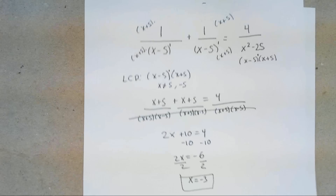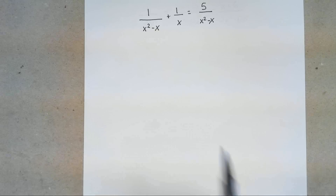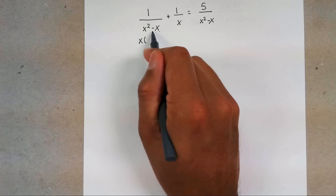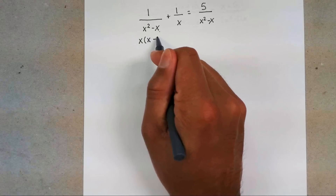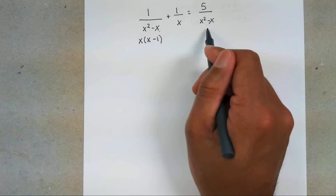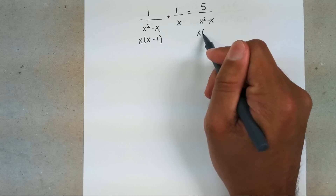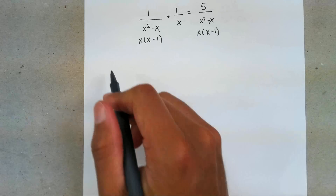Let's look at another example: 1 over X squared minus X plus something equals 5 over X times X minus 1. First, factor everything out. For X squared minus X, take out a common X and you're left with X times X minus 1. The other denominator with two terms — also take out an X, giving X times X minus 1. Now look for your LCD.